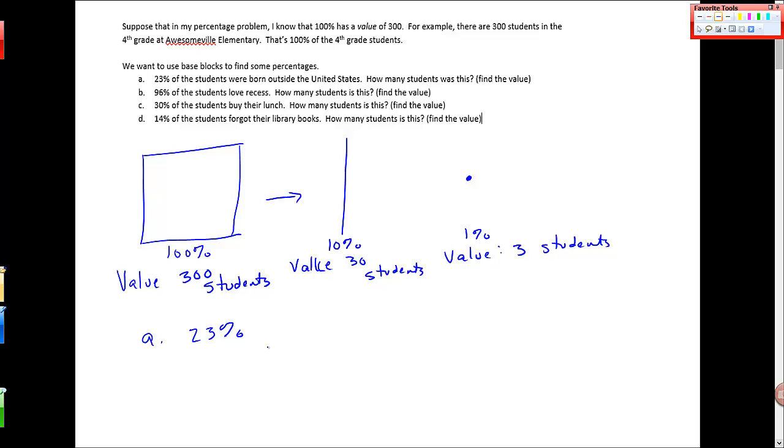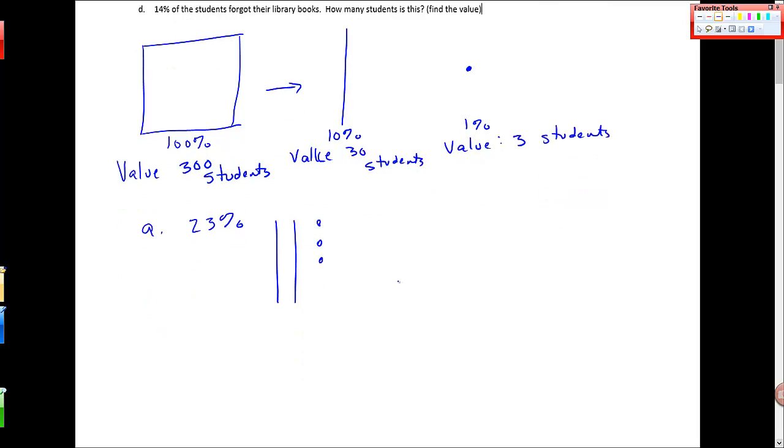So 23% in base blocks looks like this. But I know from my breakdown above that this is, right, like that's 10%, 10%, and 3%. But I know that this also has a value for each of these.